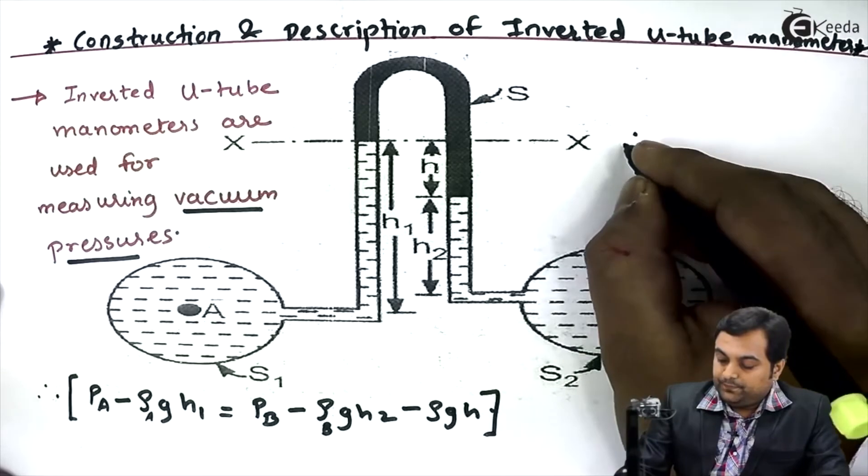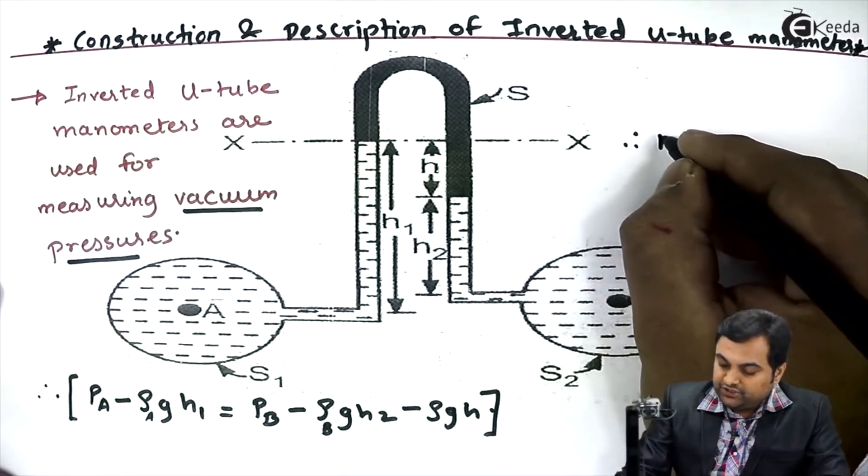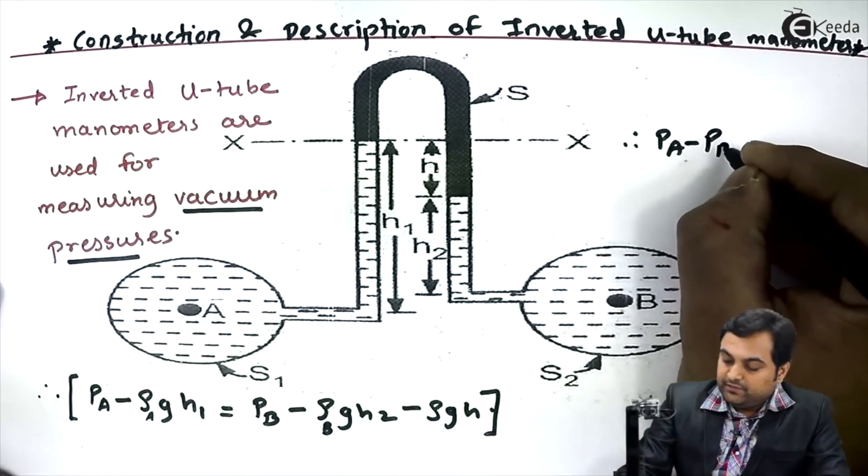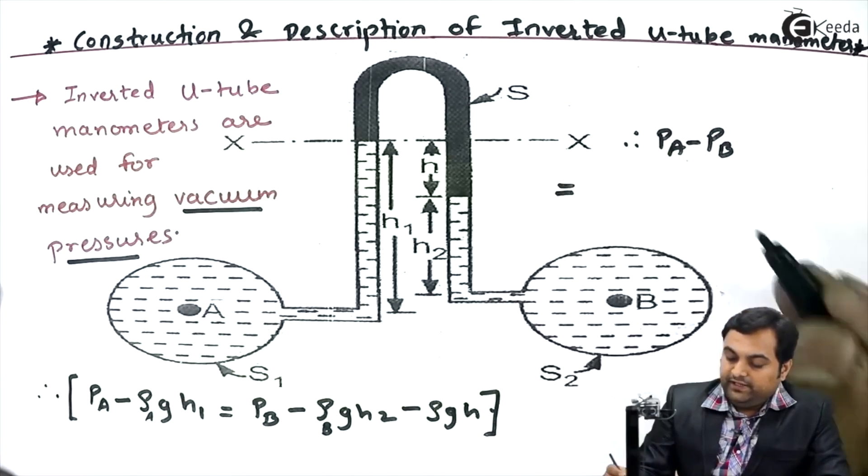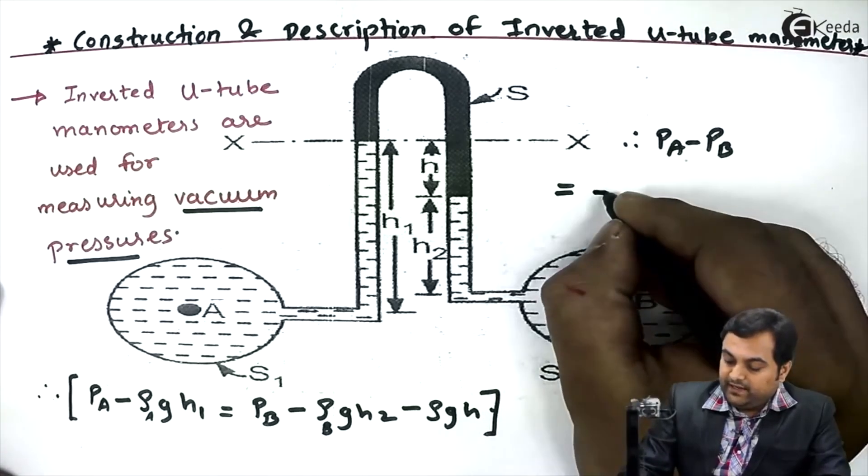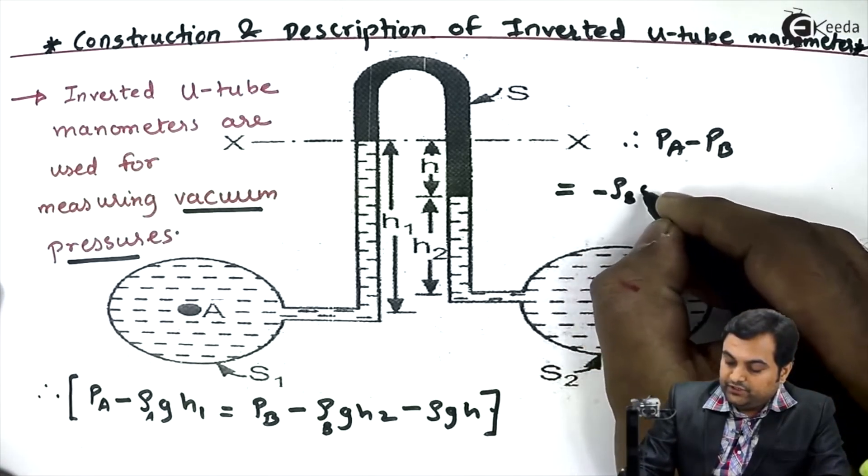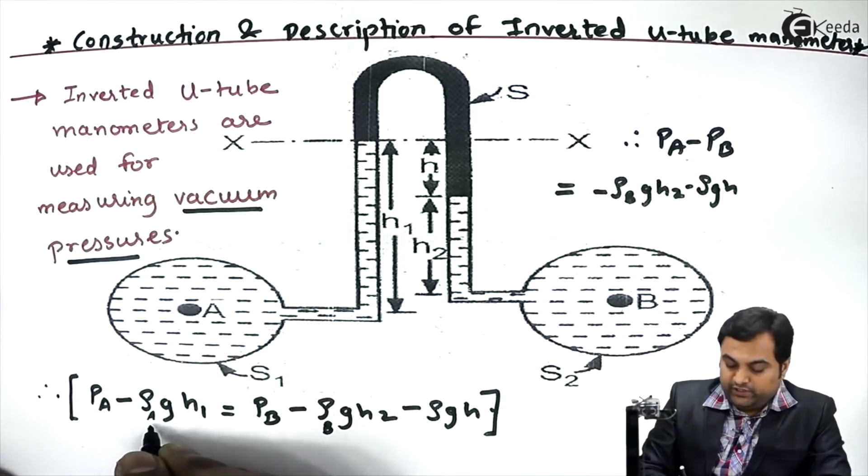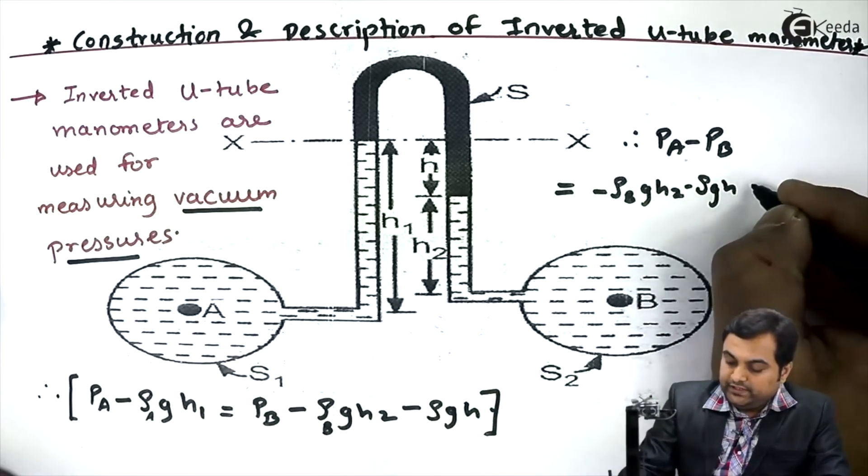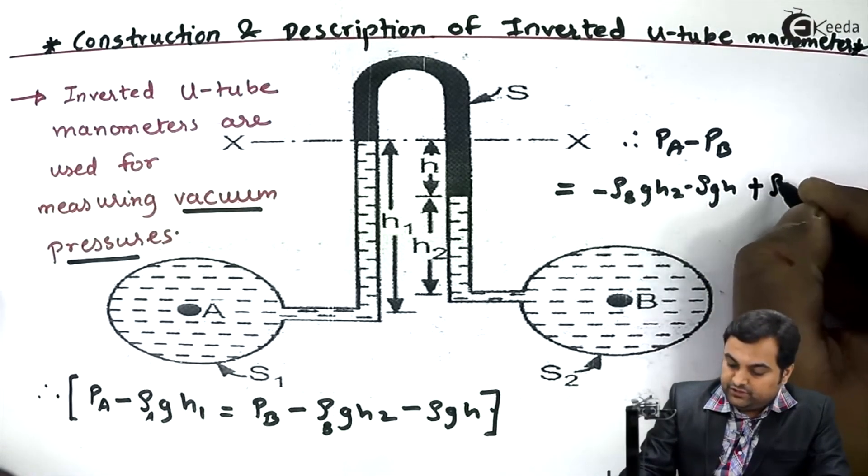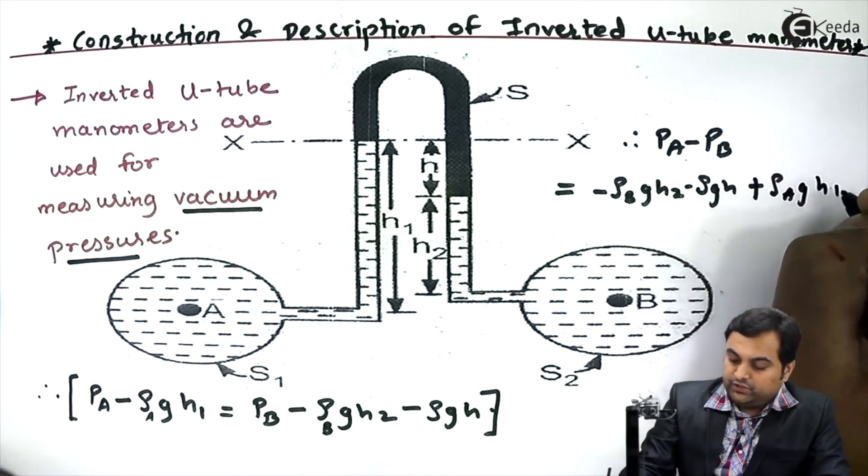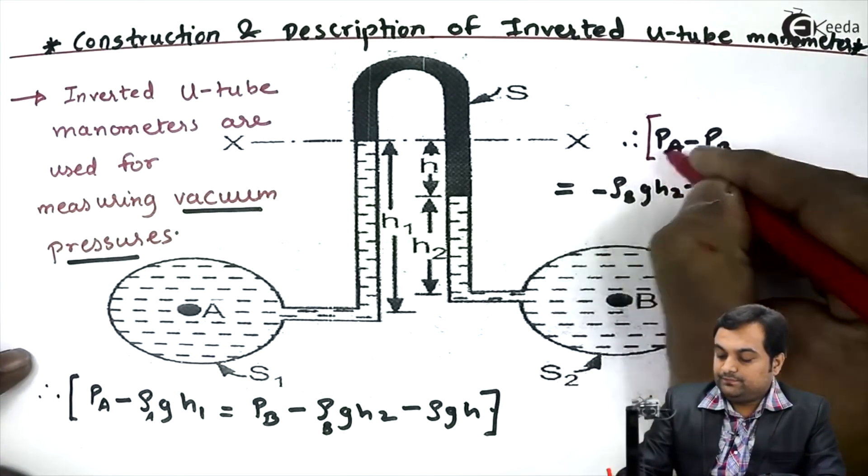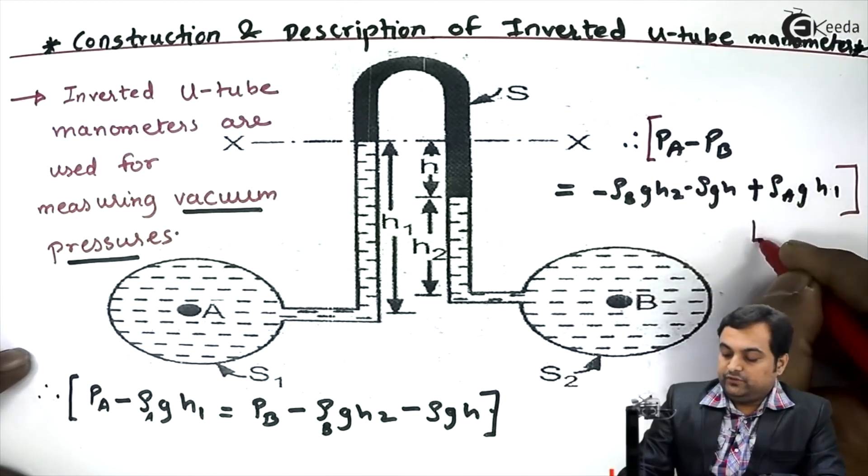Now in order to calculate the pressure difference, we can write: PA - PB = -ρB·g·h2 - ρ·g·H + ρA·g·h1. So now by using this equation, we can calculate and call it as equation one.